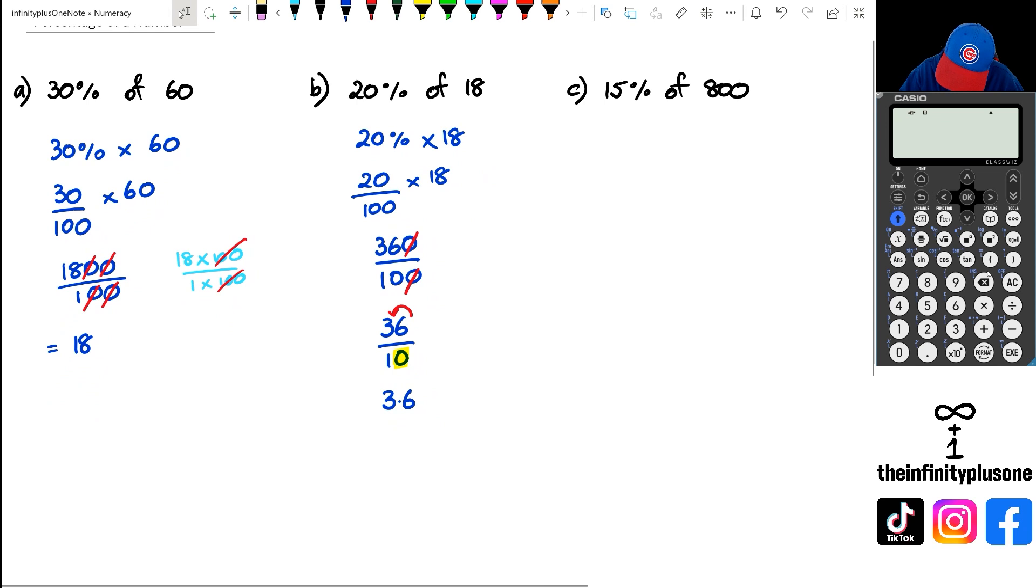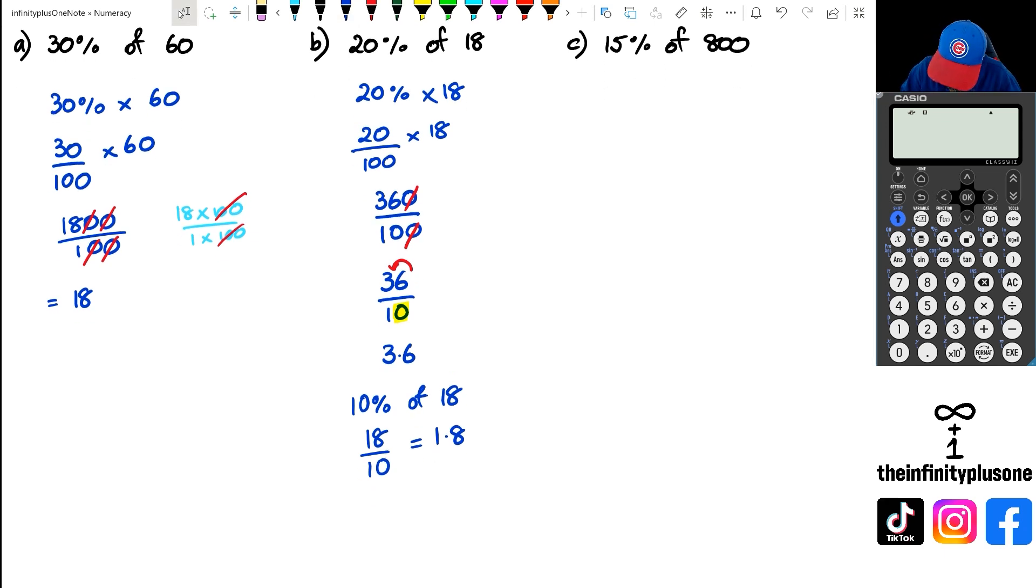That's one way of doing it. Now the second way of doing it is actually to work out what 10% of 18 is. To work out what 10% of 18 is, all you have to do is go 18 divided by 10, and 18 divided by 10 is 1.8, again using that decimal point moving one place value across. Now if 10% is 1.8, then we can actually say 20% is the same thing as saying 2 times 10%, so we can actually say 2 times 1.8, and 2 times 1.8 is again 3.6.